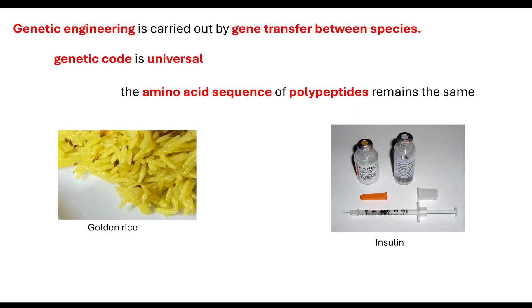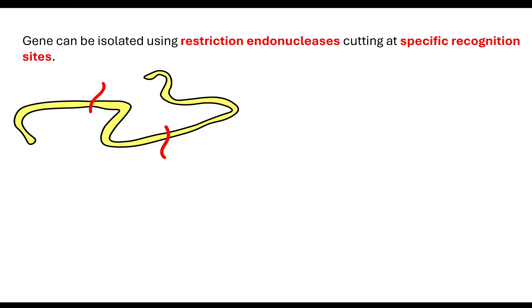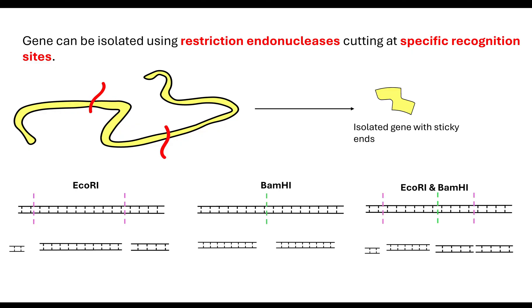So let's look at how we do that. The first thing that needs to happen is the gene that we are interested in can be isolated. It can be isolated using restriction endonucleases — these are enzymes that are going to cut at a very specific recognition site. When they cut at that recognition site, they will allow for this isolated gene to have sticky ends, and those sticky ends are able to form hydrogen bonds with complementary base pairs. So as long as we use the same restriction endonucleases, we can create similar sticky ends.